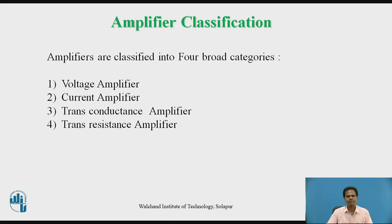Now let us go for the classification of amplifiers. Amplifiers are classified into four broad categories: voltage amplifier, current amplifier, trans-conductance amplifier, and trans-resistance amplifier. The deciding factors for categorization are the relative magnitude of the input impedance of the amplifier in comparison with the input signal source impedance, and the output impedance of the amplifier in comparison with the output load resistance impedance.